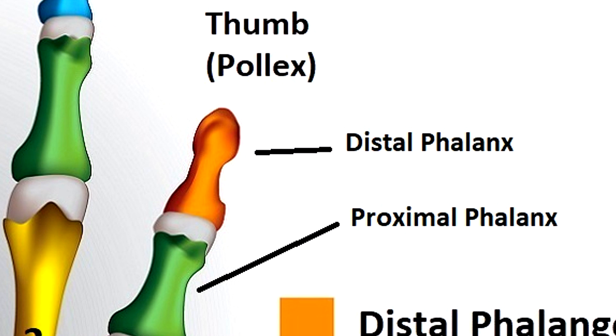The thumb has only the distal and proximal phalanges — it has no middle bone. Many people don't realize it, but if you grab the thumb in the middle and wiggle the tip a little bit you can actually detach it from the hand like this. Just kidding, I totally made that up.